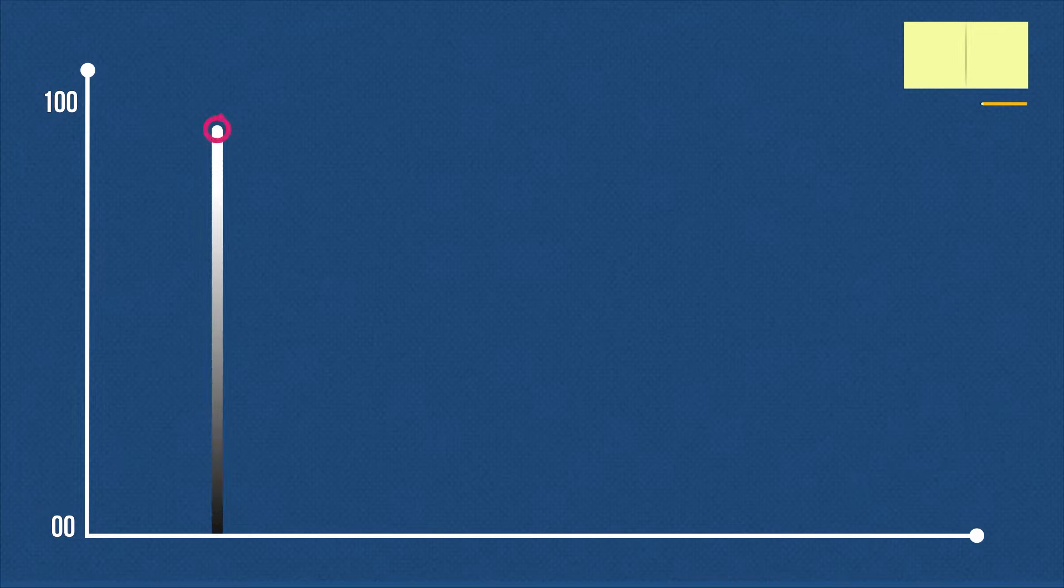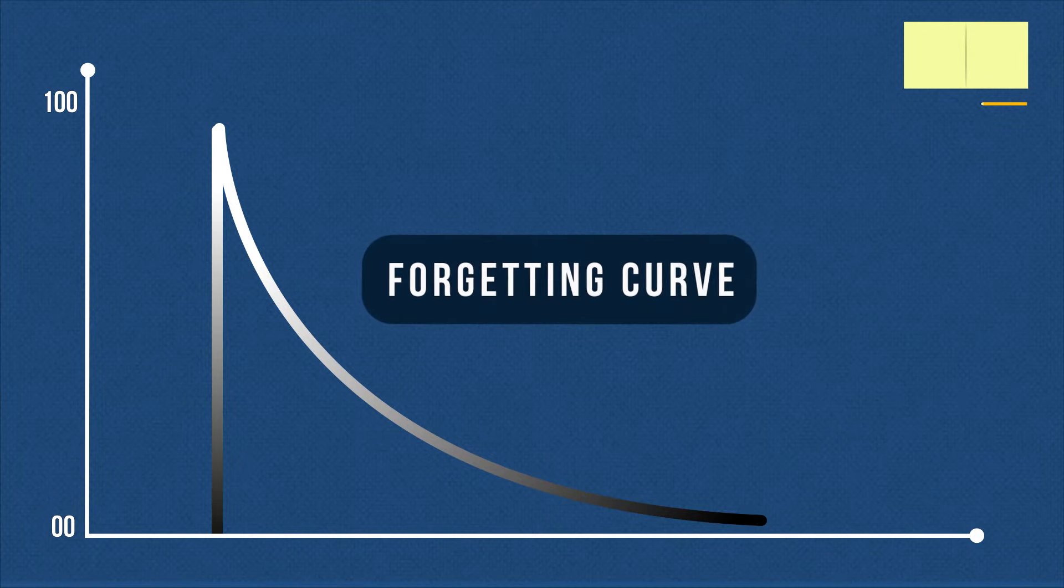Let's assume you're studying a certain chapter today. The y-axis of the graph represents the memory strength, with a maximum value of 100%. When you study the chapter for the first time, you develop a strong memory. Let's call this the primary memory. But with time, memory strength fades rapidly. This is the normal forgetting curve.